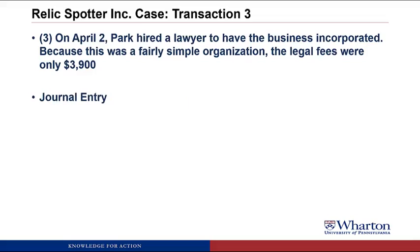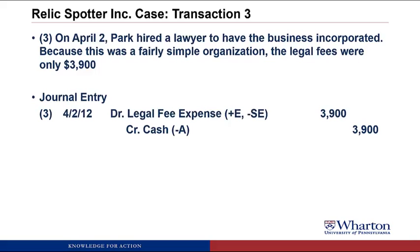I always recommend starting with cash if it's involved in the transaction. We're paying $3,900 of cash for legal fees, so cash is going down. Cash is an asset — assets go down through credits — so we credit cash for $3,900. Notice that even though I started with cash and it was a credit, I don't write it first in the journal entry. We always write debits first, so I skip space, write the credit second and indent it. Now we need a debit: we're not really getting an asset, this is just a cost of doing business, so it's legal fees expense. Expenses get increased through debits, so we debit legal fee expense for $3,900, which increases expenses and reduces stockholders' equity.